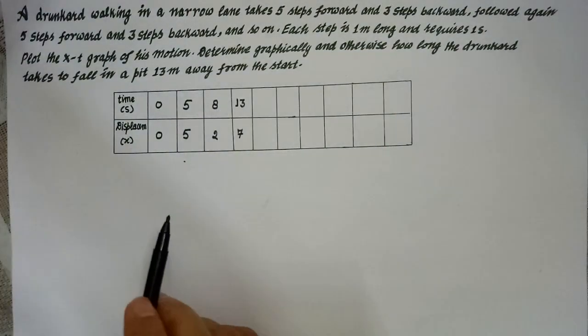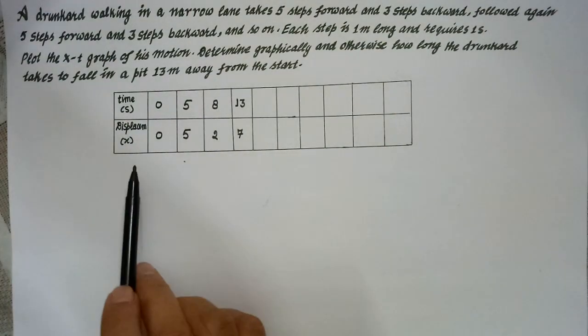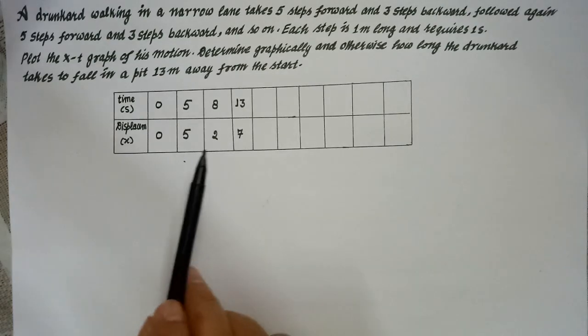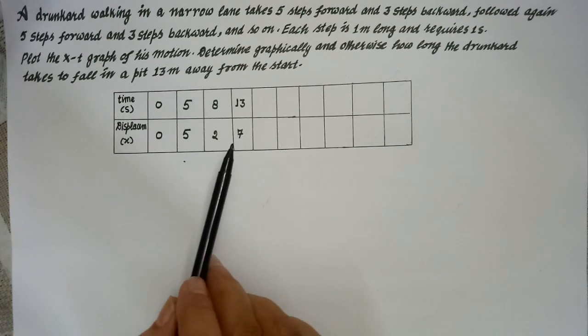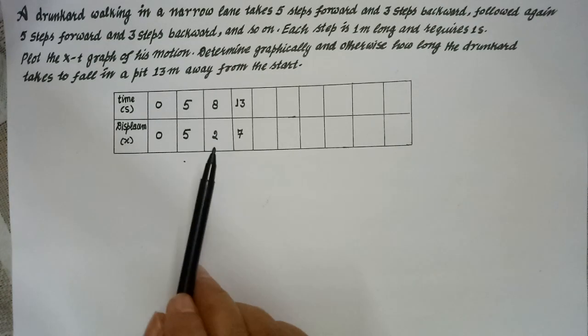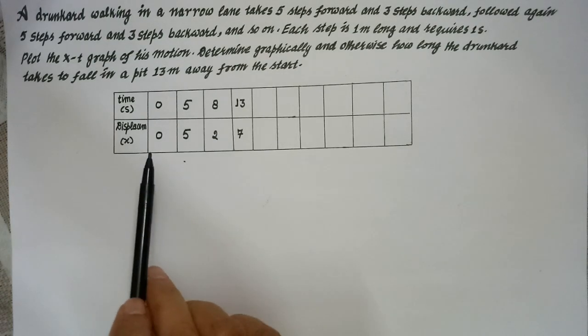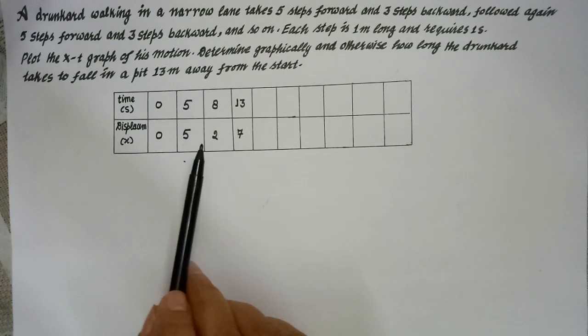At the 30th second, the person's displacement from the starting point is 7 meters.